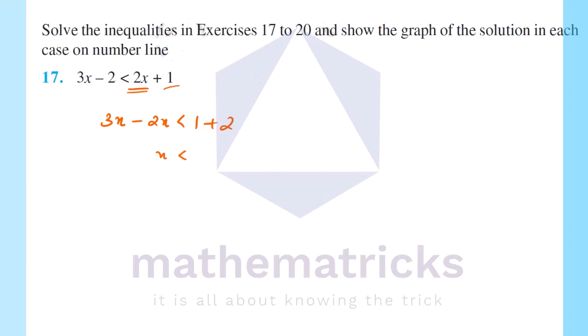That gives x less than 3. The solution is the open interval minus infinity to 3, because x is strictly less than 3. So the open interval is minus infinity to 3, and all values less than 3 come into the solution.